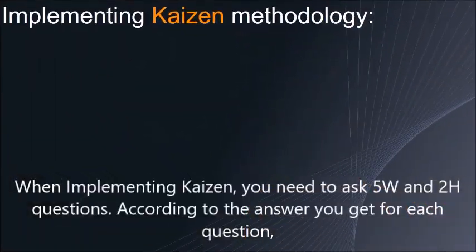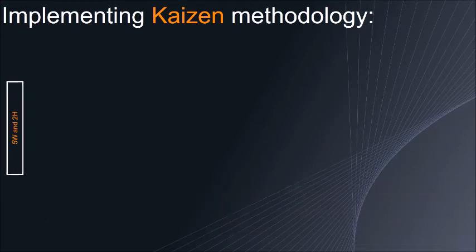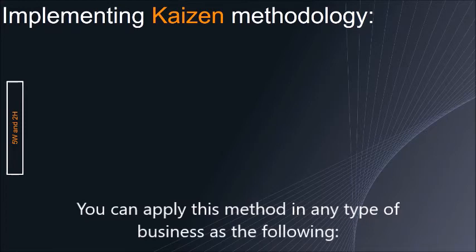When implementing Kaizen, you need to ask five W and two H questions. According to the answer you get for each question, your actions can be to eliminate, change, simplify, or improve. You can apply this method in any type of business.